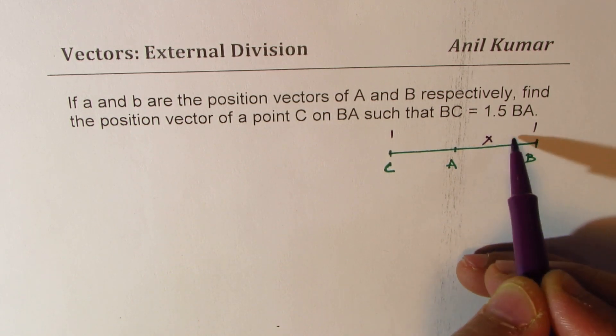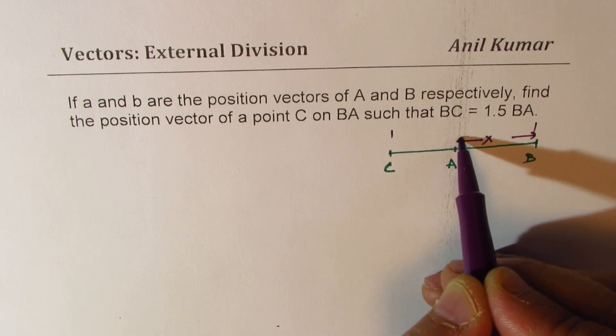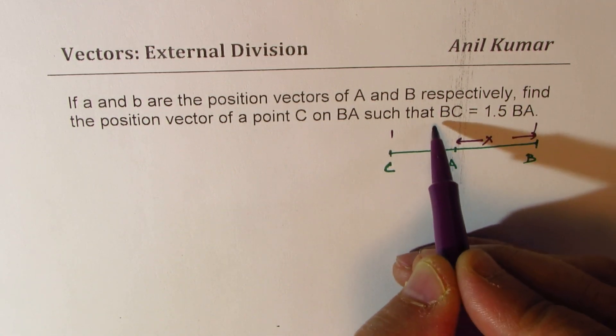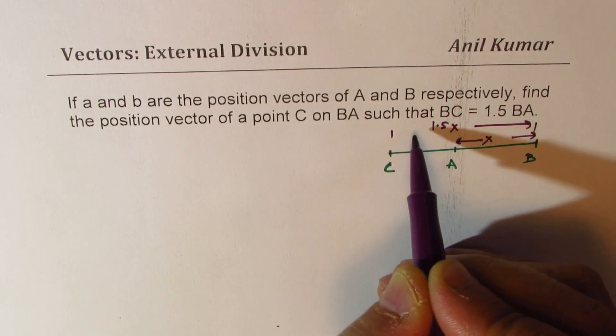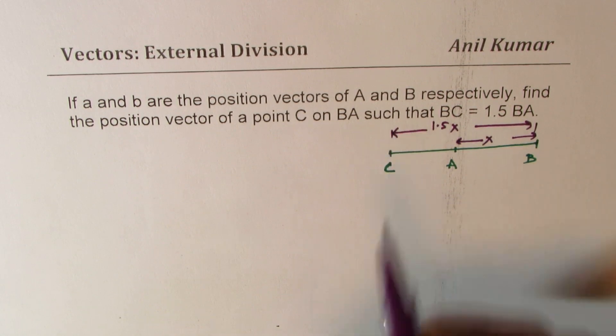So if this is X, in that case, B to C is 1.5 X. That is what we are given. Now let's try to understand this.